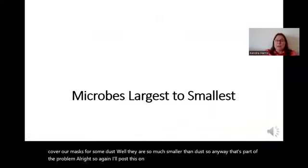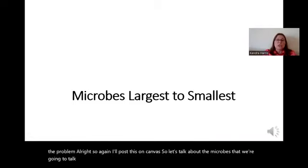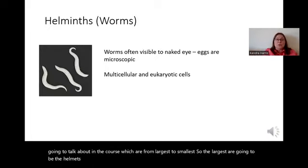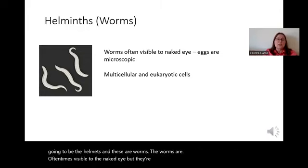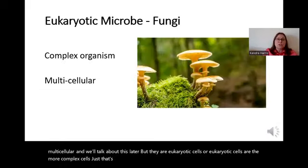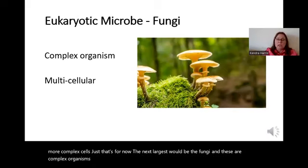Let's talk about the microbes we're going to cover in the course, from largest to smallest. The largest are the helminths — these are worms. The worms are oftentimes visible to the naked eye, but their eggs are microscopic. These organisms are multicellular and they are eukaryotic cells. Eukaryotic cells are the more complex cells. The next largest would be the fungi, and these are complex, multicellular organisms.